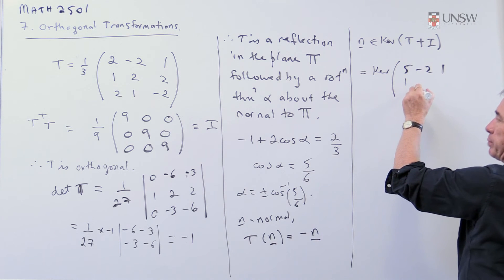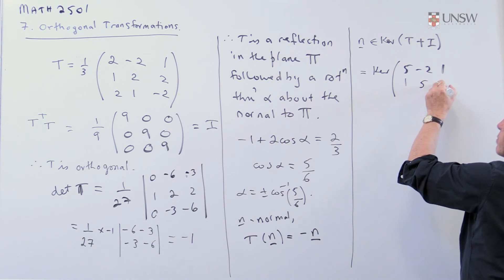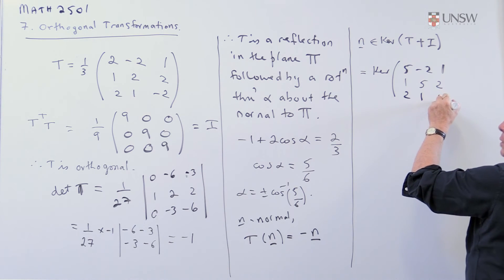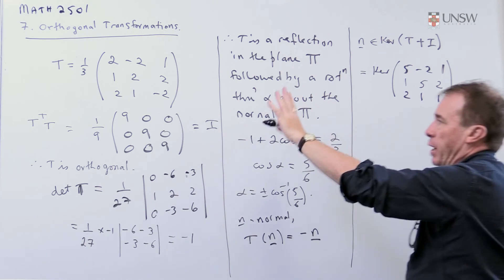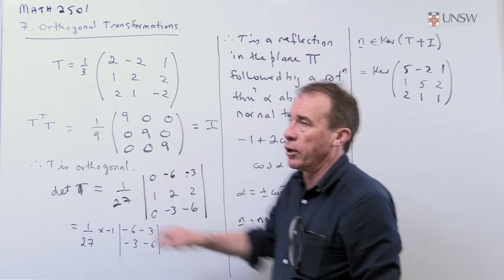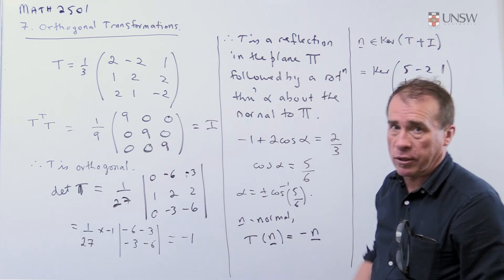And so I will just add three to the main diagonal. Just note carefully that step. So I add three to the main diagonal. And then I can forget about the one third because the kernel of this matrix is the same as the kernel of the third of it.